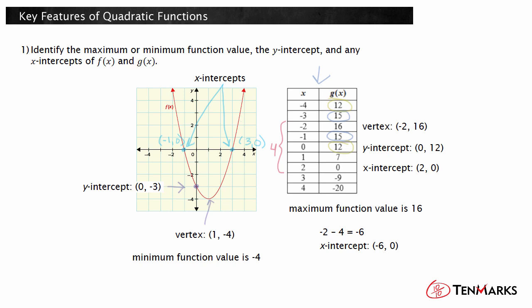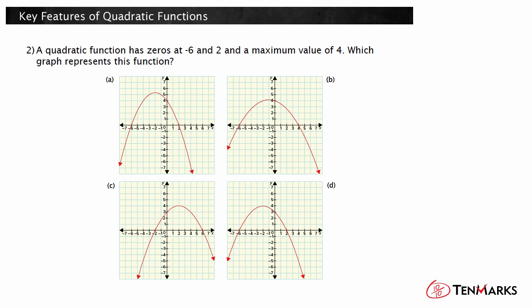Now let's look at how to determine which graph matches a description of key features. A quadratic function has zeros at negative 6 and 2, and a maximum value of 4. Which graph represents this function? Zeros of a quadratic function are the x values that make the function value 0, so they are the x values of the x-intercepts. Look at choice A. Does the graph have zeros at negative 6 and 2, and a maximum value of 4? It has x-intercepts at negative 6, 0 and 2, 0, so it has zeros of negative 6 and 2. However, it has a maximum value between 5 and 6, not at 4. Remember that the maximum value is located at the vertex, and not the y-intercept.